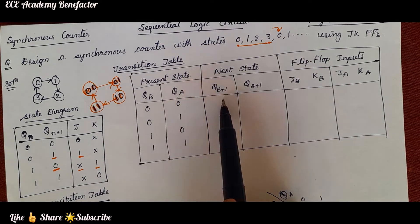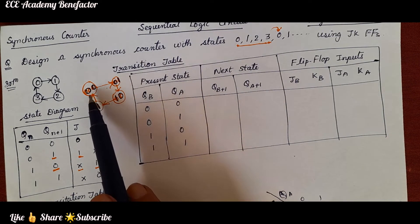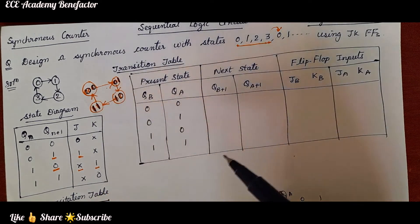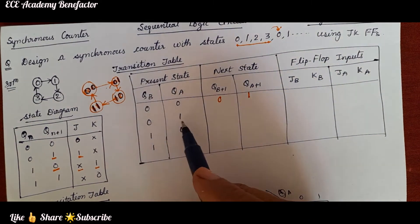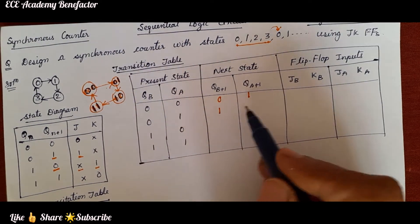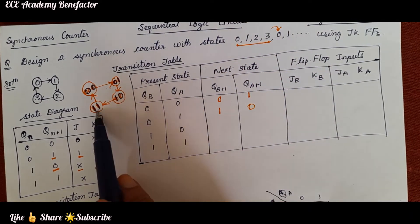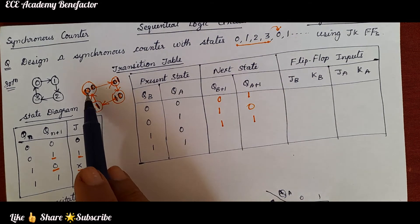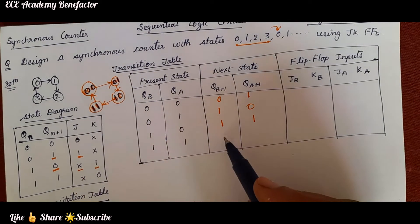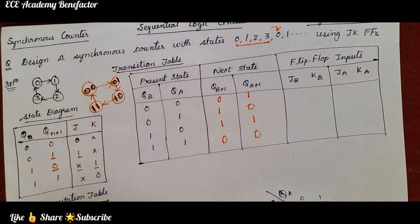Now we need to write what is the next state. Look at the state diagram. After 00, what is the state? 01. So what will come here? 01. After 01 the next state is 10. After 10, what is the next state? 11. After 11, what is the next state? 00. In this way we have written the next state by looking at the state diagram.